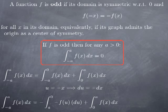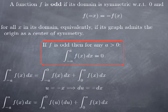Pulling out the negative sign and using the fact that f is odd, we obtain the integral from a to zero of f of u du. Since the variable name doesn't matter, this equals the integral from a to zero of f of x dx. Adding to this the integral from zero to a of f, we get the integral from a to a of f, which is zero.